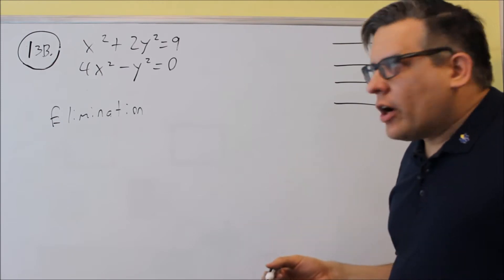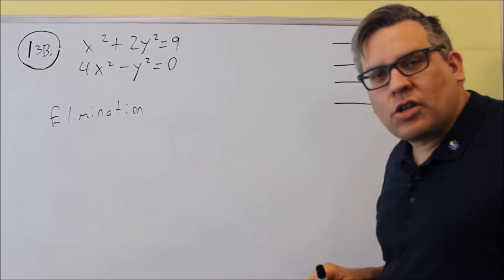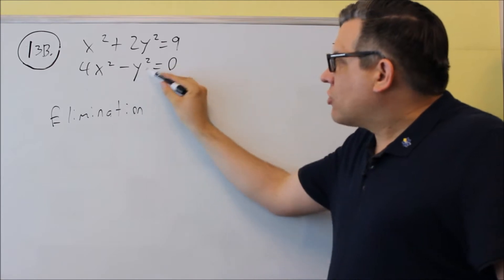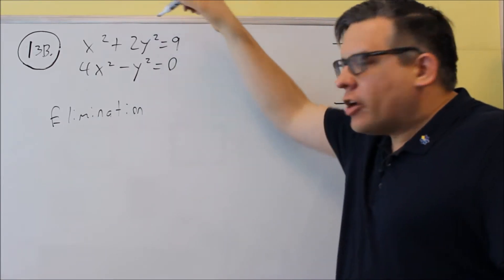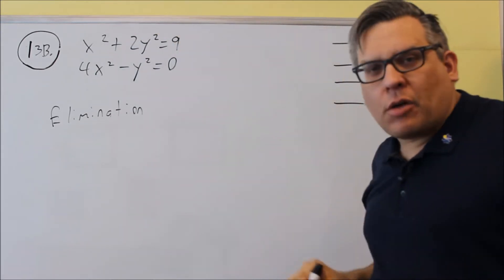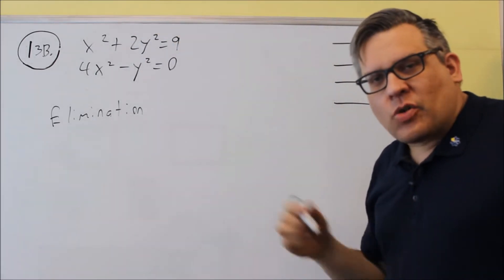So because we don't have a y isolated, it's probably going to be better to solve this one by elimination. Yes, you could actually solve this for y squared and put that into here, but then you're going to get an x to the fourth with an x squared and a nine. That might be more difficult to factor.